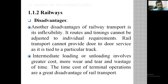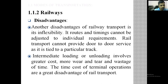Railway routes and timings cannot be adjusted to individual requirements. As per the individual's requirements, we can't change the routes or timings of the trains. Rail transport cannot provide door-to-door service as it is tied to a particular track — through these tracks only we are going to transport the passengers and goods. Intermediate loading or unloading involves greater costs, more wear and tear, and wastage of time. The time cost of terminal operations is a great disadvantage of rail transport.